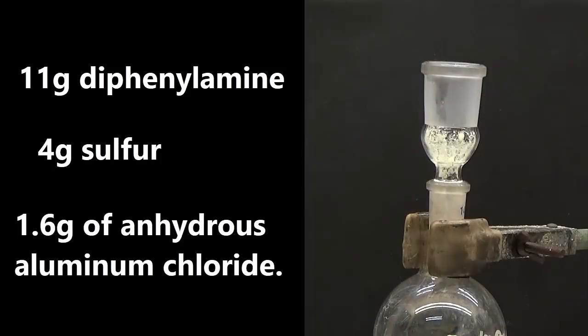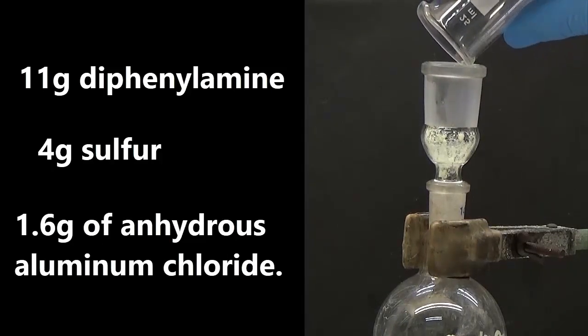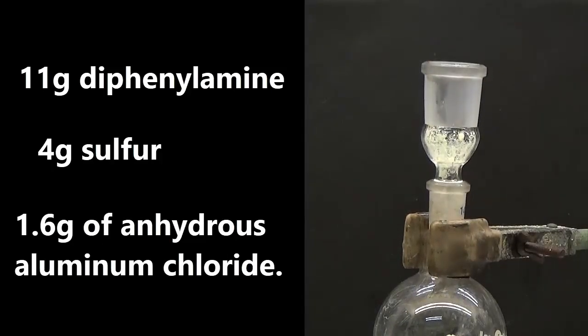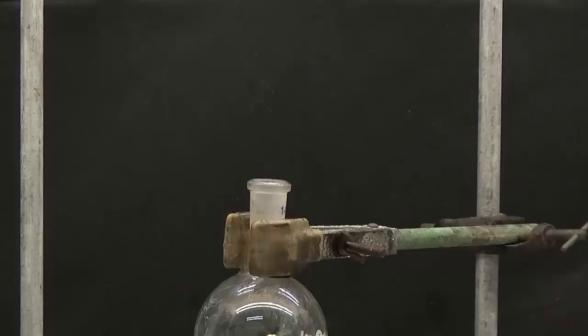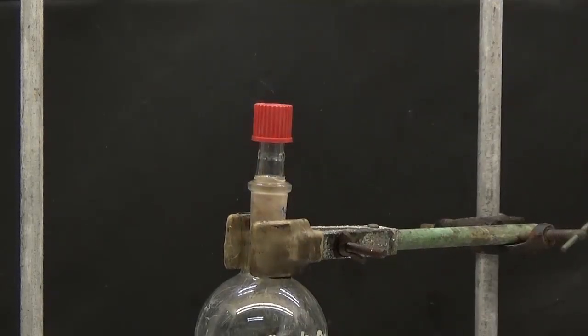and 1.6 grams of anhydrous aluminum chloride. Apply a magnetic stirrer to stir the molten mixture. We connect the flask outlet with the smoke outlet using a tube.